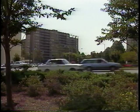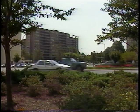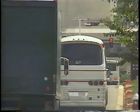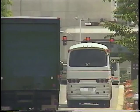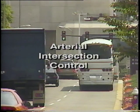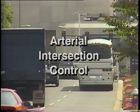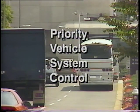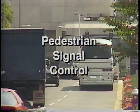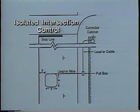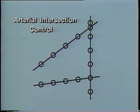Today, detectors are used almost every place there are moving vehicles. The most common use of detectors, however, is still on city streets where most intersections are signalized. These most common detector applications fall into six categories: isolated intersection control, arterial intersection control, closed network control, area-wide system control, priority vehicle system control, and pedestrian signal control.